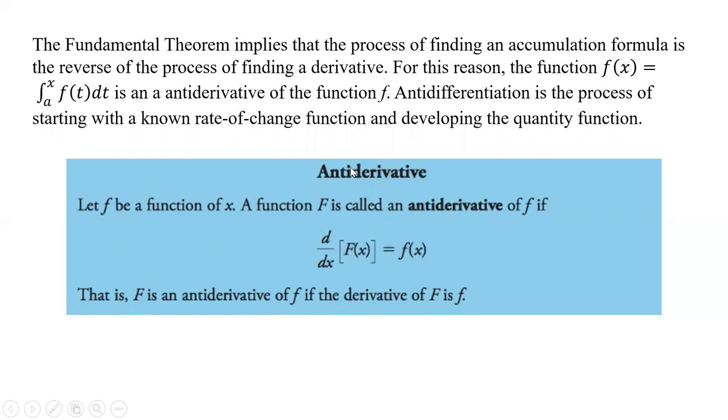Anti-differentiation is a process of starting with a known rate of change function and developing the quantity function. So here we got the anti-derivative. So let f be a function of x and a function capital F is called an anti-derivative of f if we take the derivative of capital F(x), we get back f(x). That is, F is an anti-derivative of f if the derivative of F is f.